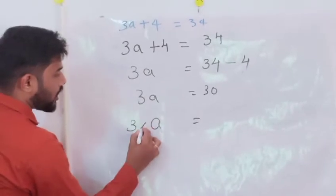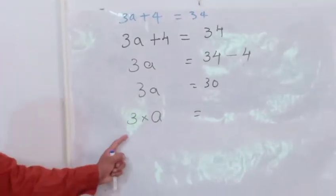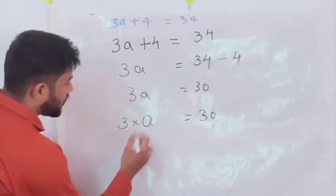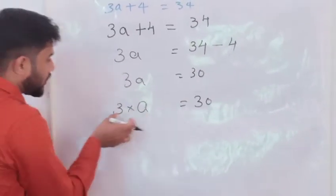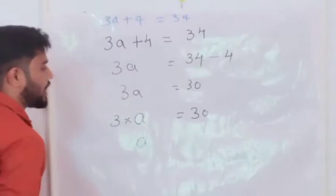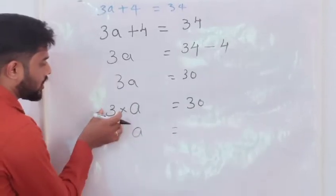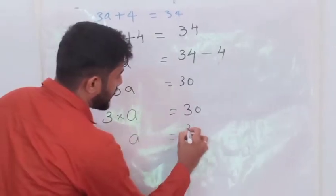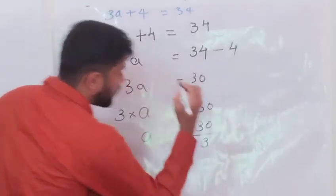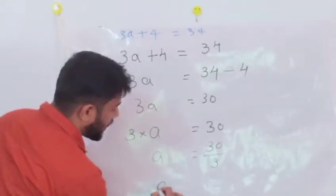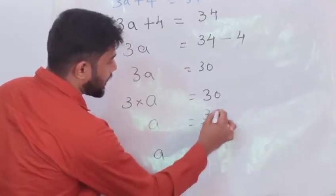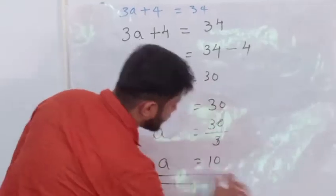3A means 3 into A. Now, I am keeping A here. This 3, from left hand side, I am going to take it to right hand side. Then it becomes divided by 3. So, A, which is equal to 30 divided by 3, then it has become 10. The answer will be 10.